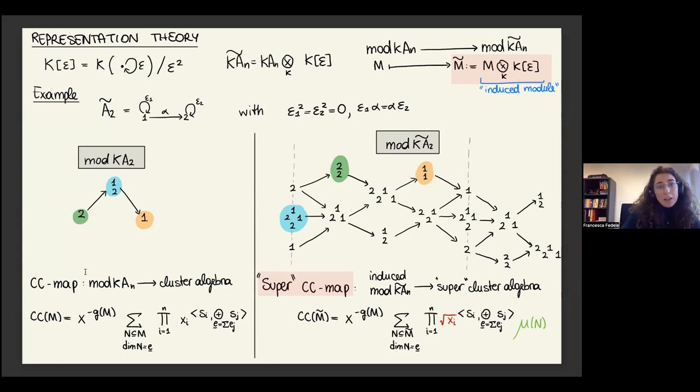Each color corresponds to the corresponding module in mod KN2. The classic CC map associates to each of the indecomposable KN modules its corresponding cluster variable. This is the formula: it has the G vector and then computes using all of the submodules of N. Our super CC map starts with any induced module, so not all of the modules over here but just the induced ones, and it associates to each of these its corresponding supercluster variable, super lambda length. The map is very similar to the original one, but the main difference is that here you have a square root of your XI, and then we have this extra term, this mu of N, which associates the correct mu invariant to each submodule. This was the hardest part to figure out.